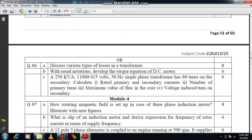Question 6: Discuss the various types of losses in transformer. You have to speak about copper loss and core loss. Again, core loss is segmented into hysteresis loss and eddy current loss.